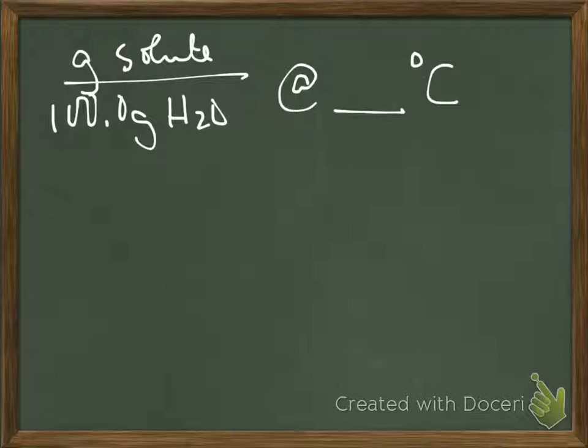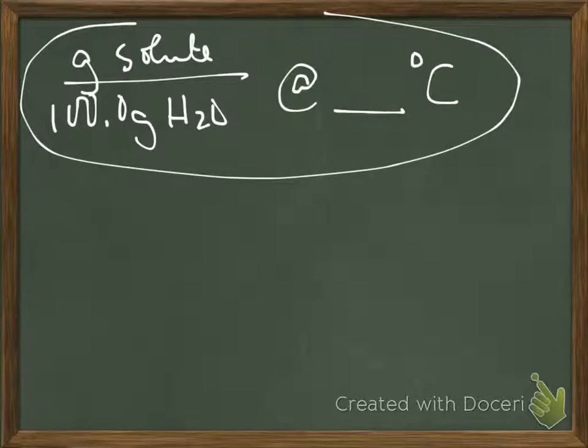On the front, which is the side that has the temperatures across the top, you'll notice there are 10 columns going from 0 to 100. On the back, that column header didn't transfer, so I would go ahead and write those across the top. You're going to be using both sides of this. All of these values are 100 grams of solute per 100 grams of water.